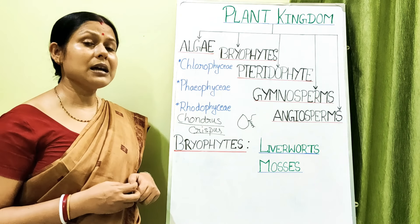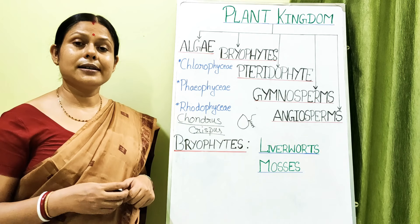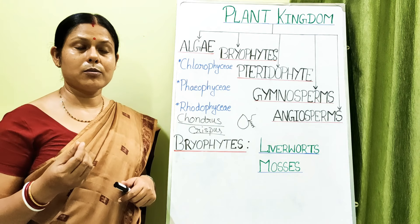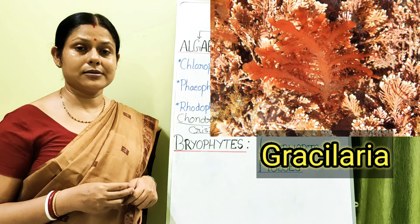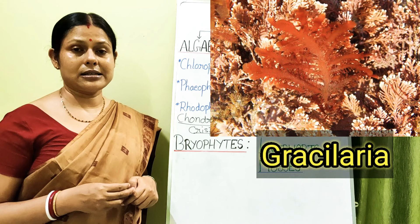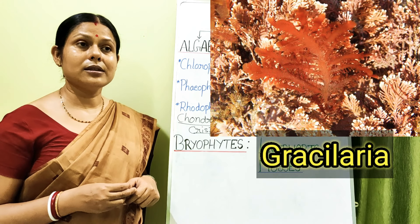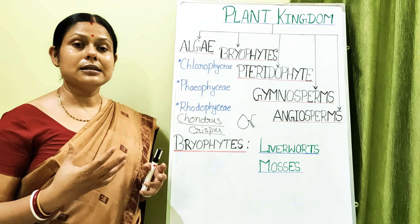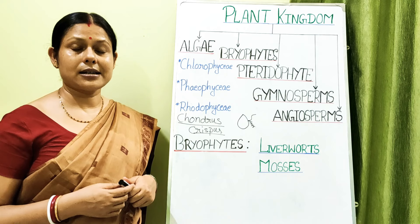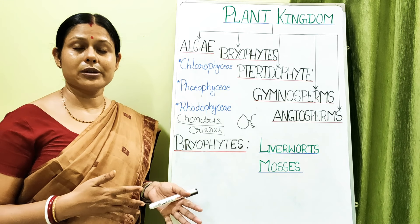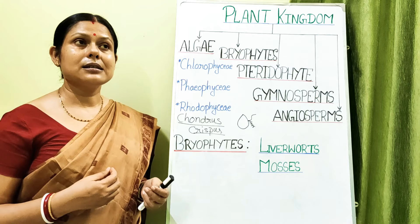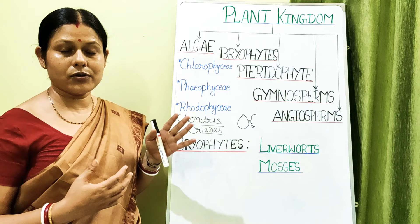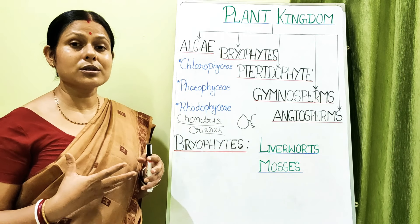A very important product from red algae is agar, obtained from Gelidium and Gracilaria. When these are dried and powdered they can be used as a medium for growing microorganisms in the laboratory. Algin, present in Phaeophycean members, is also used in making puddings, giving them a semi-solid texture.